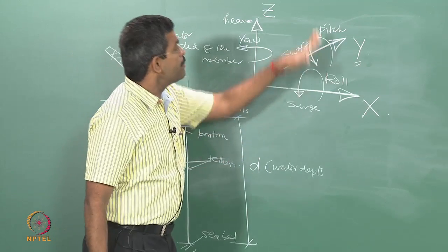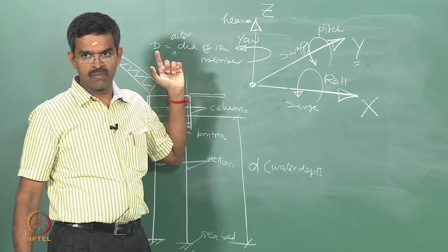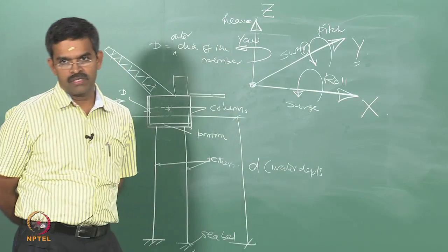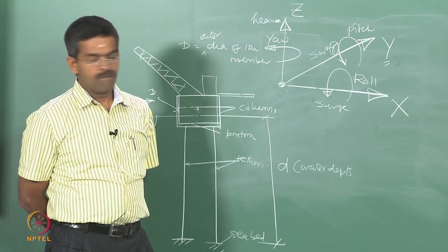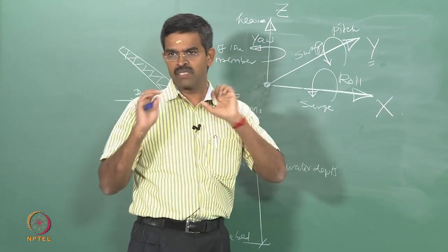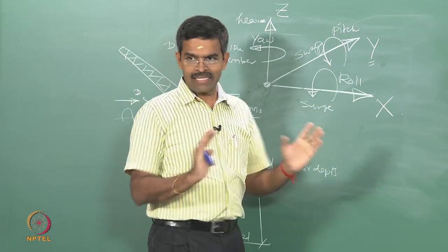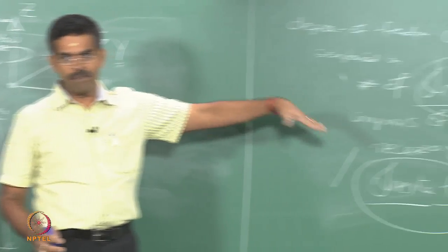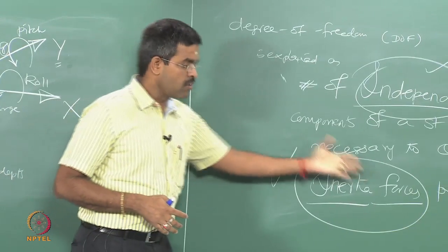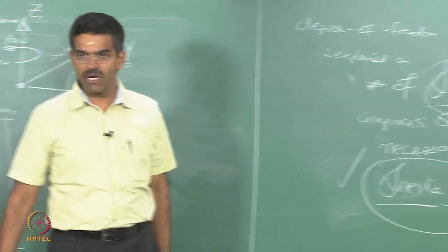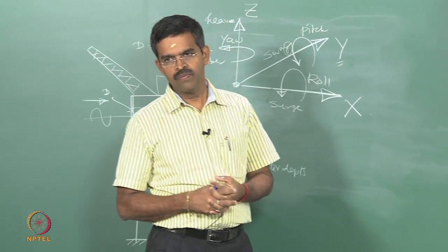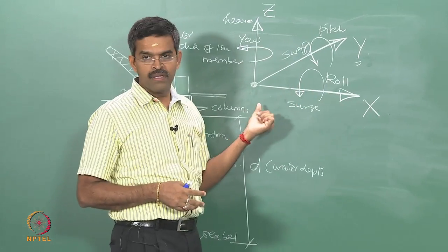Why are they called degrees of freedom? Because they are independent displacement coordinates in a given system which can help identify the inertia force in the respective displacement coordinates, and they are independent. Though the mass is only one point, there are six degrees of freedom. Therefore, degree of freedom has nothing to do with the number of points where mass is concentrated. Degree of freedom is classically defined as independent displacement coordinates which will help quantify the inertia force present in the system.